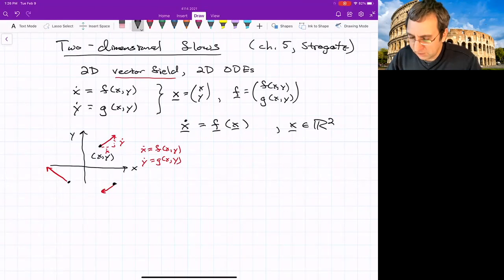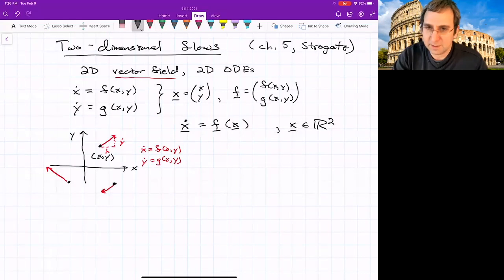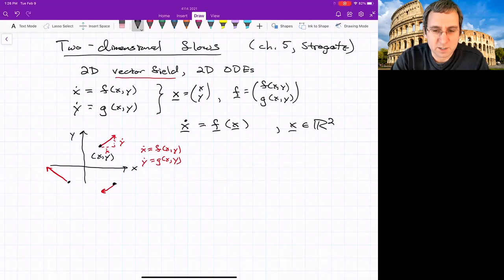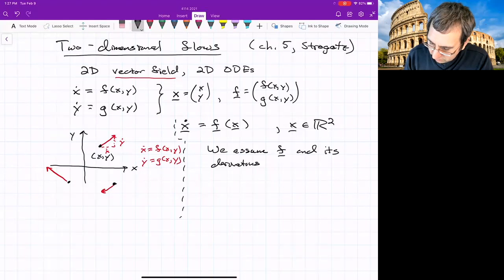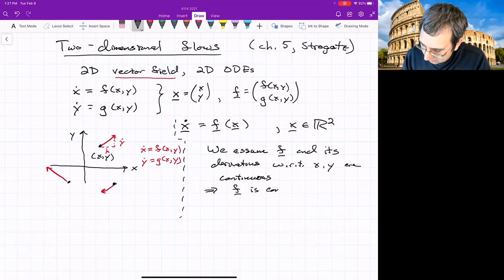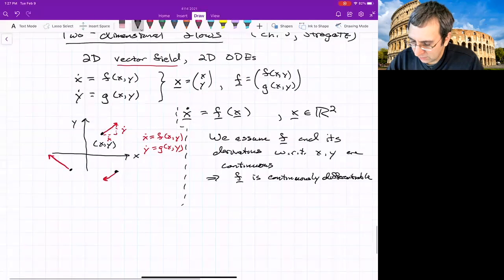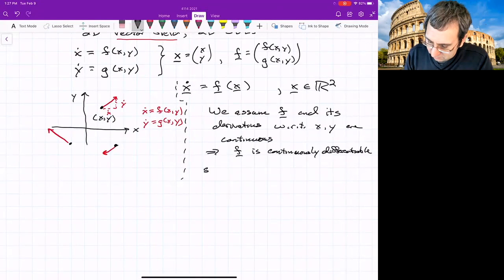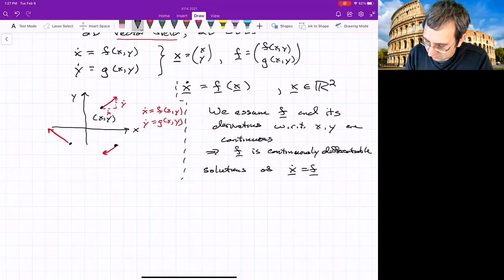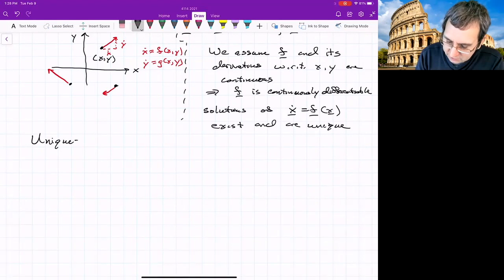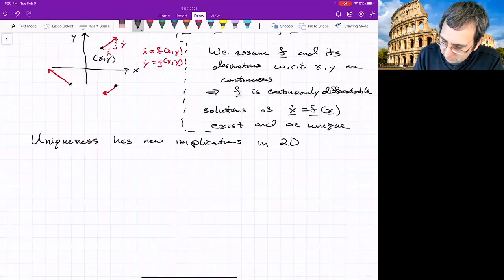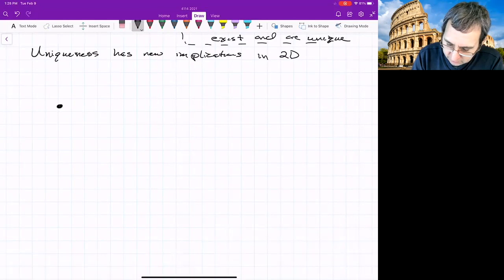We will typically assume that f is a well-behaved function for us to have existence and uniqueness, but there'll be some new things that show up because we're in two dimensions that weren't there in one dimension. So we're going to assume that f and its derivatives with respect to x and y are continuous. It means f is continuously differentiable. And if you have this, then solutions of x dot equals f of x exist and are unique. So uniqueness has new implications in 2D.